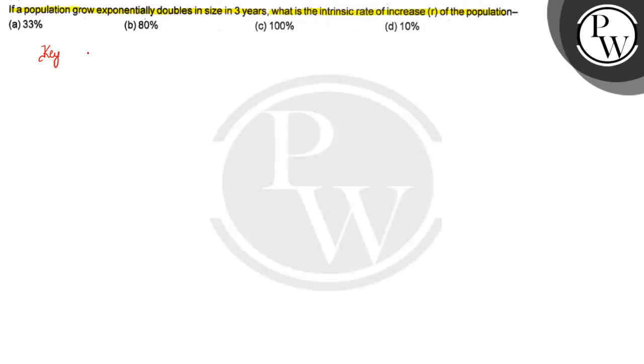So first, what is the concept? What is the concept of population growth? There are two types: exponential and logistic. Both of these have equations.